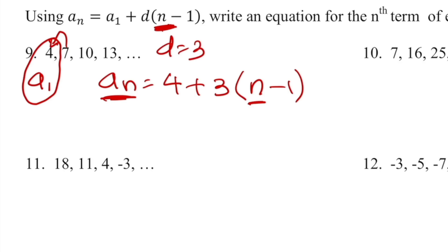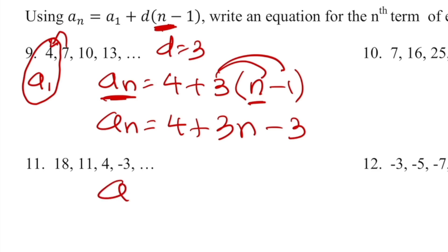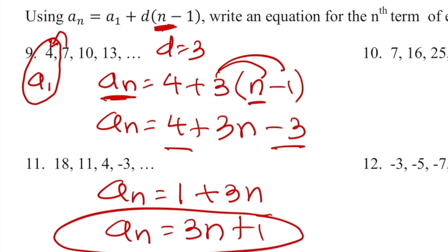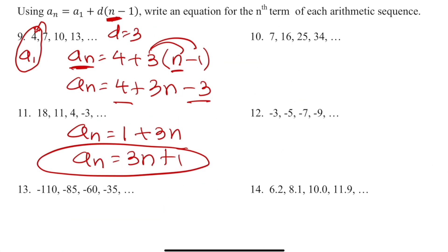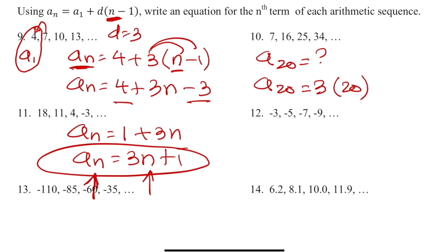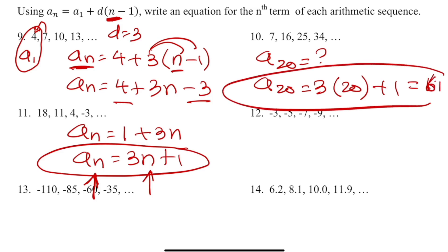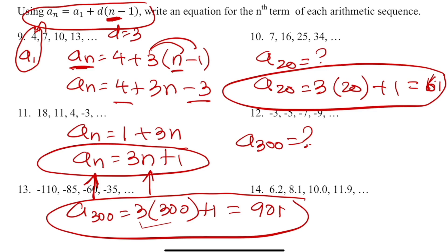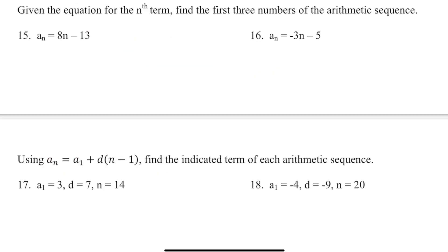Now it's just algebra: 3 times (n minus 1) gives 3n minus 3, then combining like terms gives the simplified nth term formula. For example, finding a sub 20, replace n with 20. For a sub 300, replace n with 300: 3 times 300 is 900, plus 1 is 901. The idea is to get the explicit formula starting from the general formula.